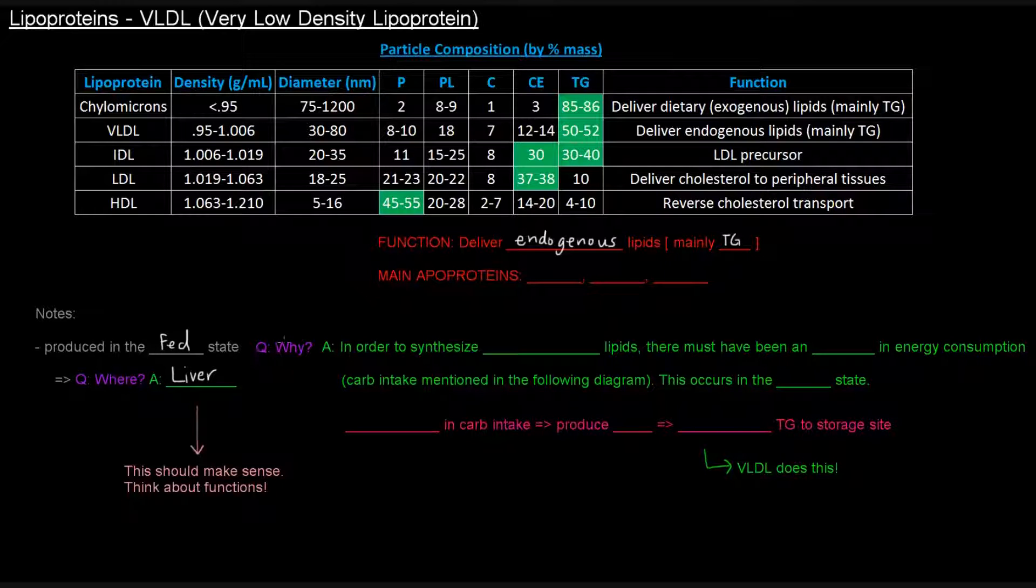Why would it be produced in the fed state? Well, in order to synthesize these endogenous lipids, there must have been an excess in energy consumption. We synthesize lipids when we eat too much, right? I'm specifically talking about when we have too many carbs, for instance. People say, like, if you eat too much sugar, it can store as fat, so this is kind of how that can happen.